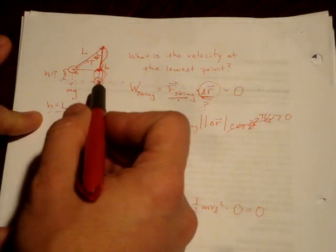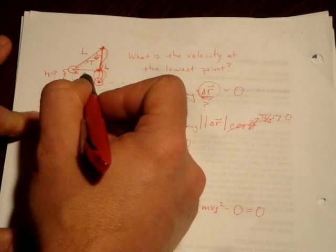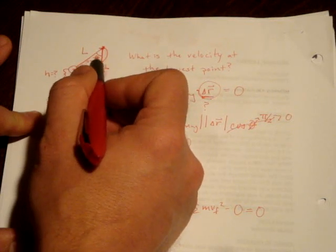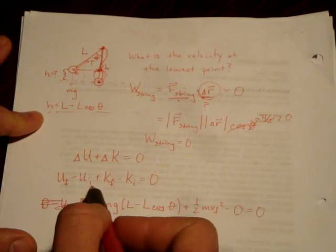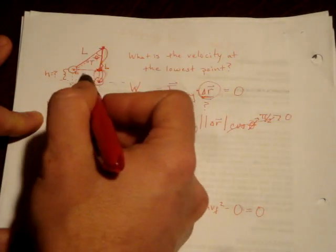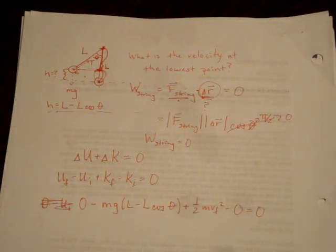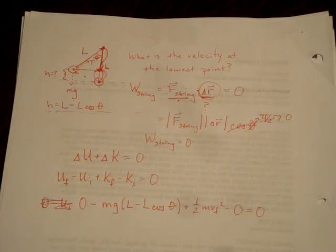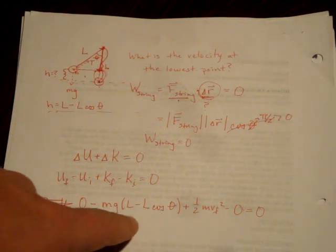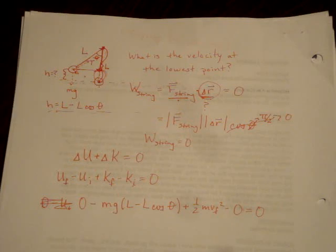It doesn't have to be exactly at the very bottom. We could define any point along this path — for example, when the angle is half as much as the initial angle, we still have no initial kinetic energy, but now we have a final potential energy based on that midway position, giving a different final velocity. It's an extremely powerful tool that gives us a lot of information even in situations where Newton's laws would be very difficult. The only reason this problem looks different is the geometry of figuring out what H is.